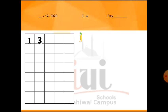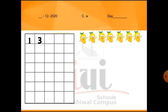Ab hum next number pe aayenge. Next number se pehle, aapne 13 mangoes mere saath count karne hain. Theek hai, ab aapne write kar liye hain na, ab aap mere saath mango count karenge: one, two, three, four, five, six, seven, eight, nine, ten, eleven, twelve, thirteen. Theek hai baccho, aapne mere saath learn kar liya hai.